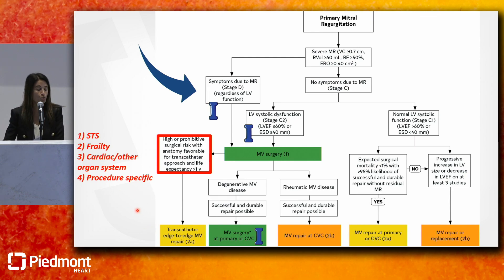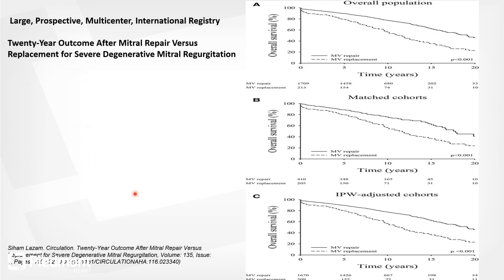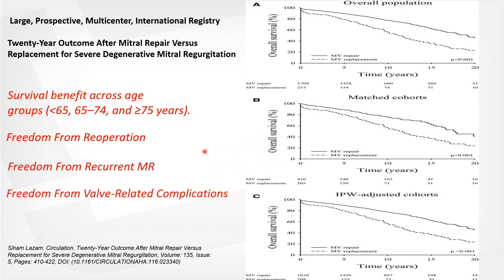These factors determine whether a patient is prohibitive or high risk, and may indicate a 2A TEER indication. There's no randomized data comparing mitral valve repair versus surgery, but the largest registry from the Mayo Clinic — covering 1980 to 1995 — showed that across hundreds of patients over 20 years, repair over replacement had a survival benefit across all age groups, with freedom from re-operation, recurrent MR, and valve-related complications.